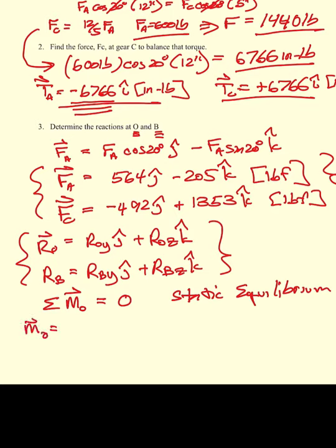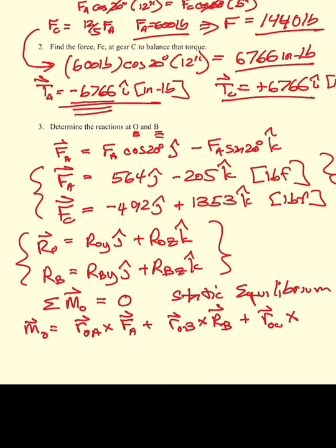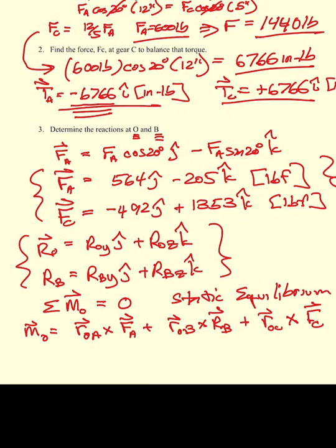The sum of moments about O is given by cross products: the location vector R_OA crossed into the tooth force at A, plus R_OB crossed into the reaction vector at B, plus R_OC crossed into FC. Setting this to zero and breaking into components — sum of Z-component moments equals zero, and sum of Y-component moments equals zero — allows us to solve for R_BY and R_BZ.